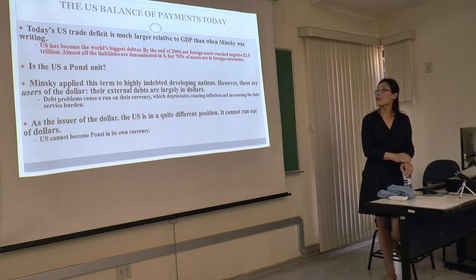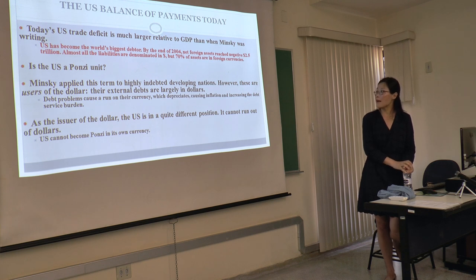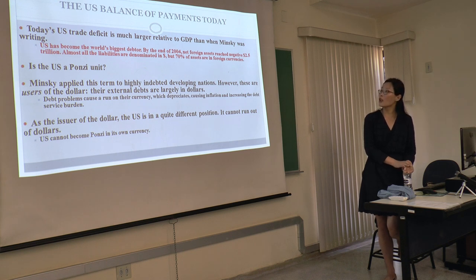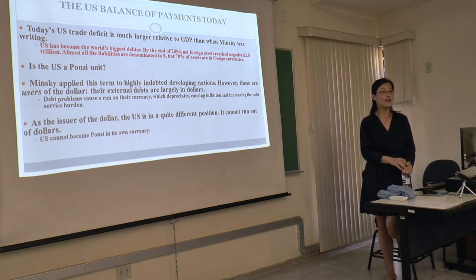Today, the US trade deficit is much larger relative to GDP than what Minsky was writing about — much larger because of financialization. And the US has become the world's biggest debtor. In 2004, net financial assets reached negative 2.5 trillion dollars. Almost all the liabilities are denominated in dollars, but 70% of the assets are in foreign currencies. So is the US a Ponzi unit? Minsky applied this term to highly indebted developed nations — however, these are users of the dollar, and their external debts are largely in dollars.